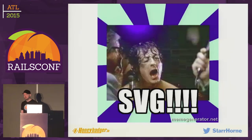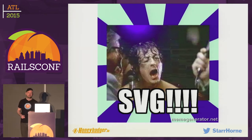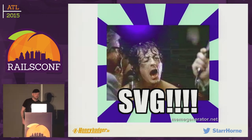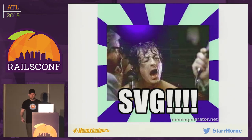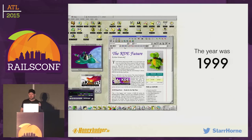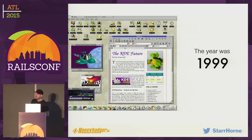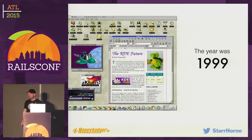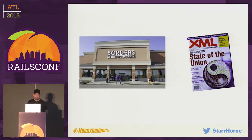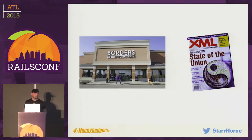SVG is really one of the most amazing technological comebacks of all time — it's the Rocky of web standards. To really understand this, you've got to go back to 1999, which is the year it came around. XML had just been invented. People thought it was going to save the world. If you were to go down to your local Borders and pick up a copy of XML magazine, as I did, you might be forgiven for being a little bit disappointed in how the web has turned out.